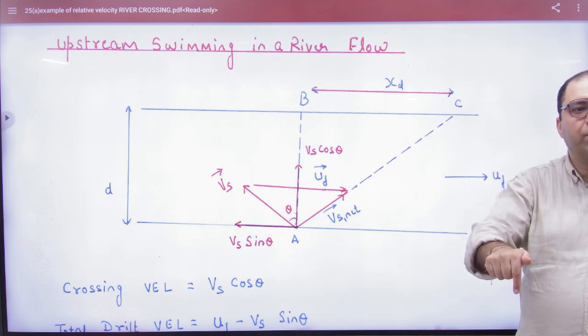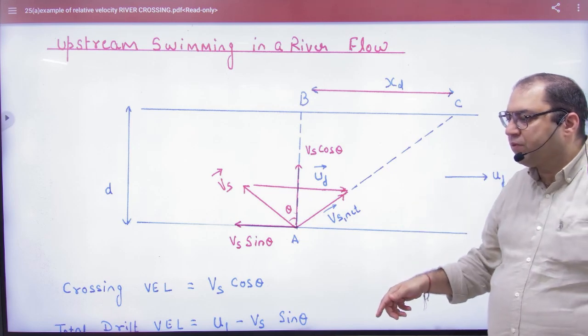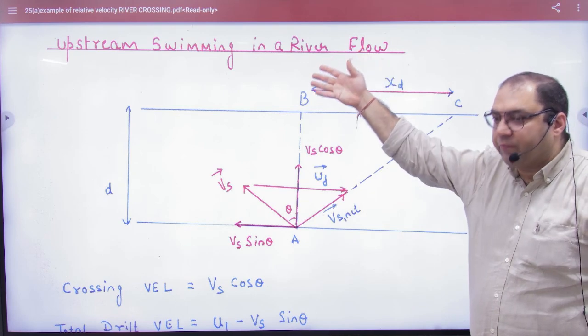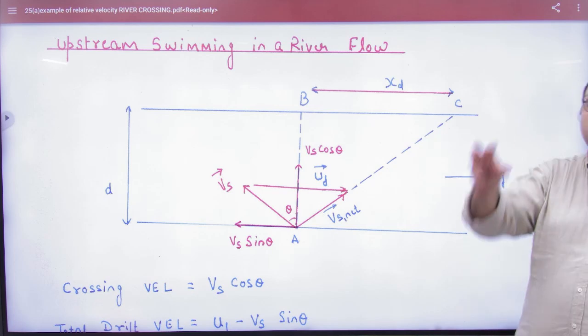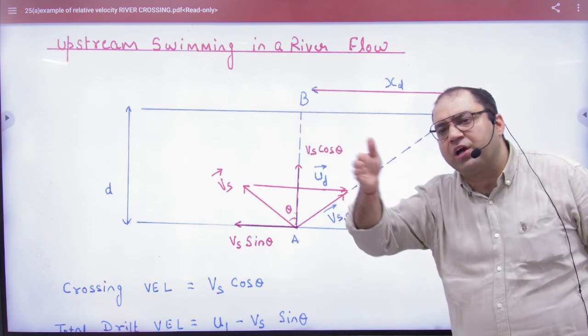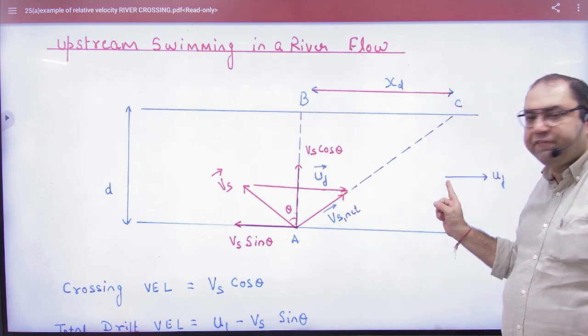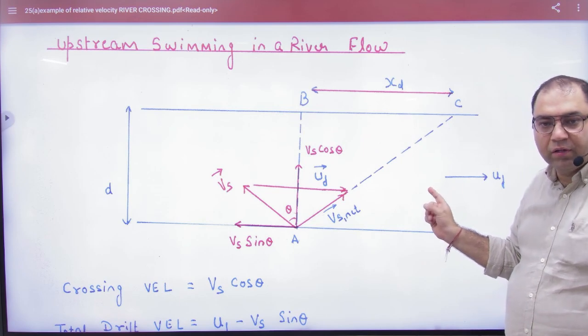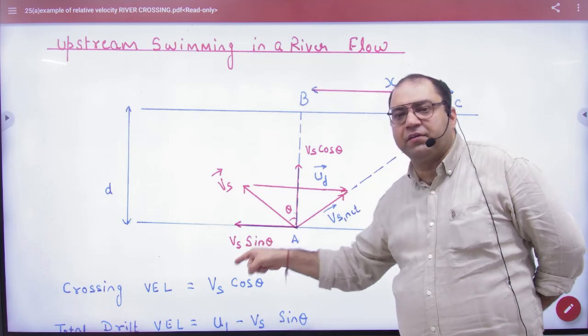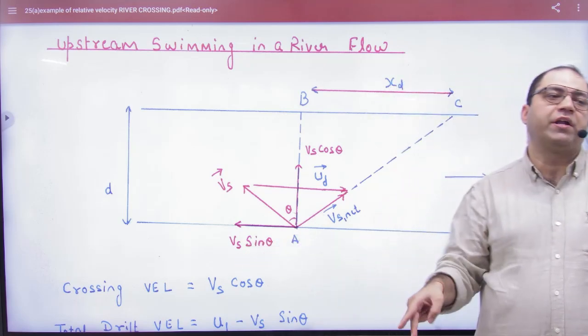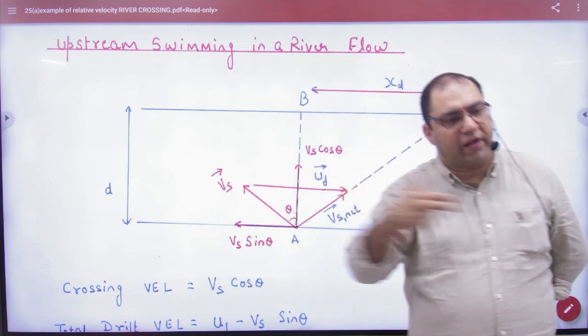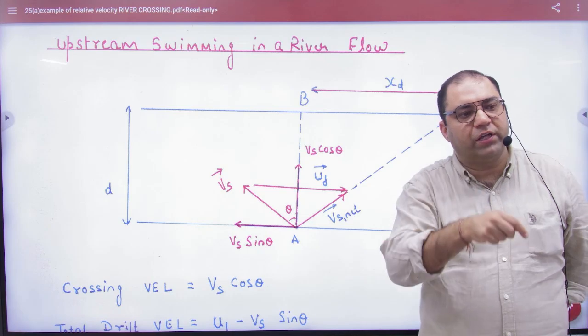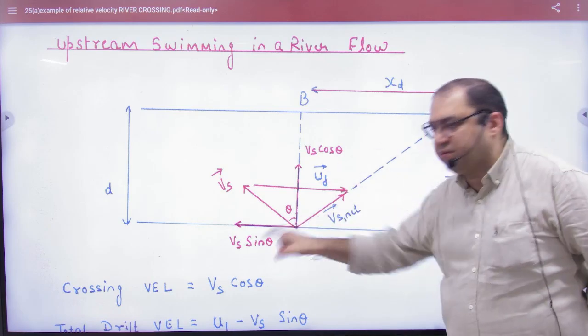Which velocity is responsible to swim it to the opposite bank? Vs cos theta. And how much of the net velocity is going to drift towards right? Vr minus Vs sin theta. Because the swimmer's component of velocity is the river's flow opposite, and the river's flow is right. So the net velocity will be Vr minus Vs sin theta.